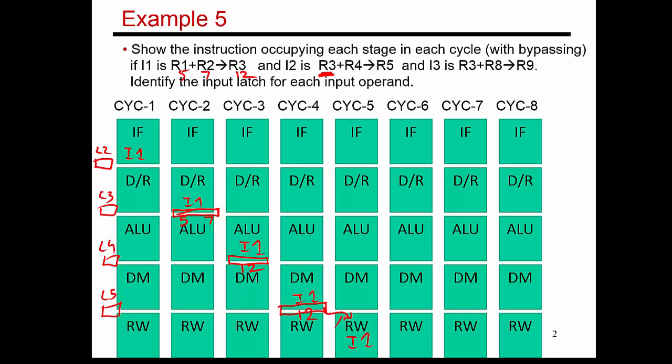Eventually it gets written into R3 in the first half of that fifth cycle. So the value 12 was available as early as latch L4 — it just moved from latch to latch until it finally got written into register R3. The end of cycle 3 is the point of production; this is when the producer actually produced the result. After that, it was just navigating through wires and latches until it found its permanent home in R3. The value 12 is available in latch L4 at the end of cycle 3.